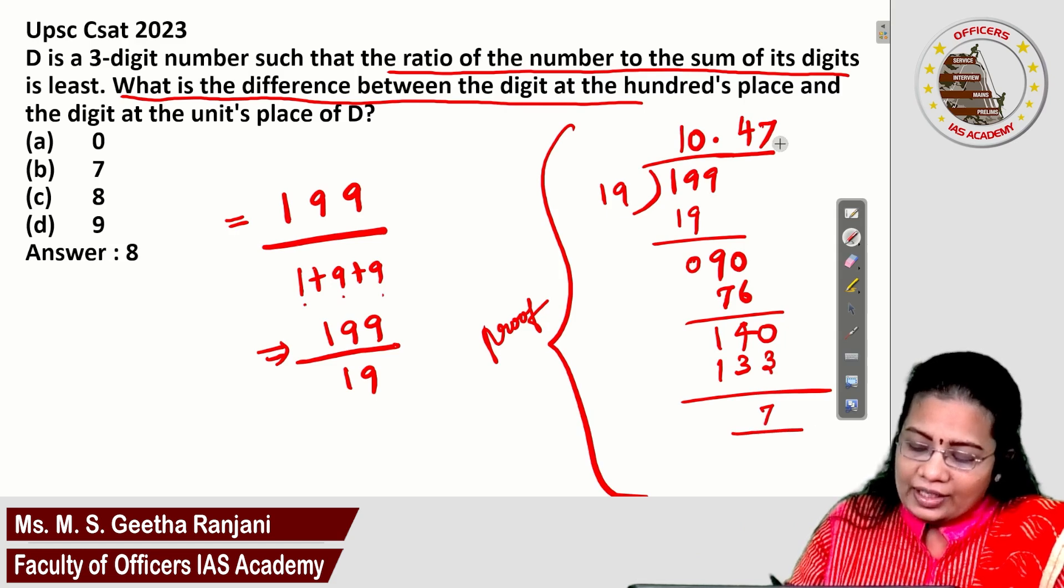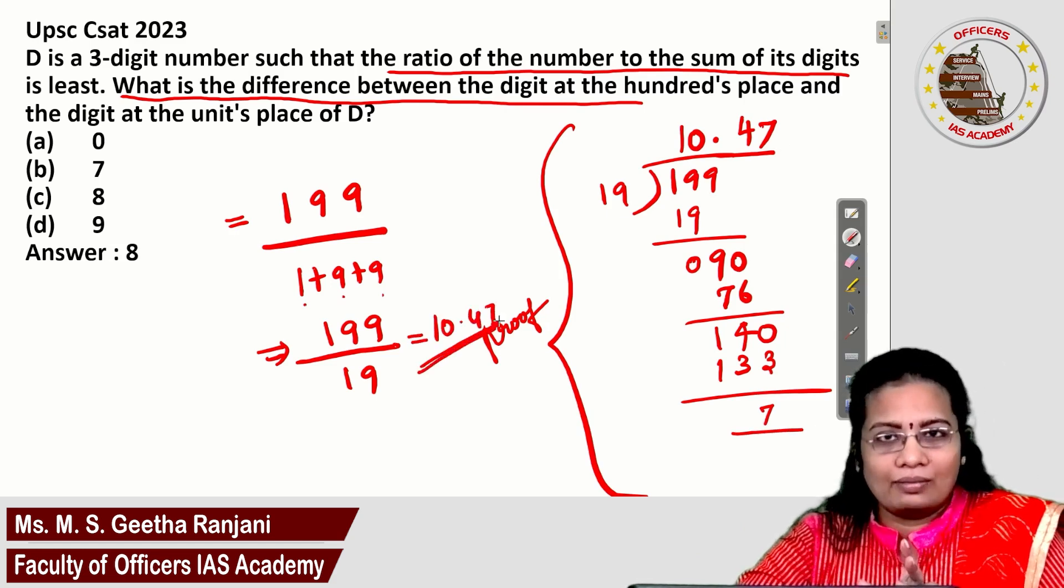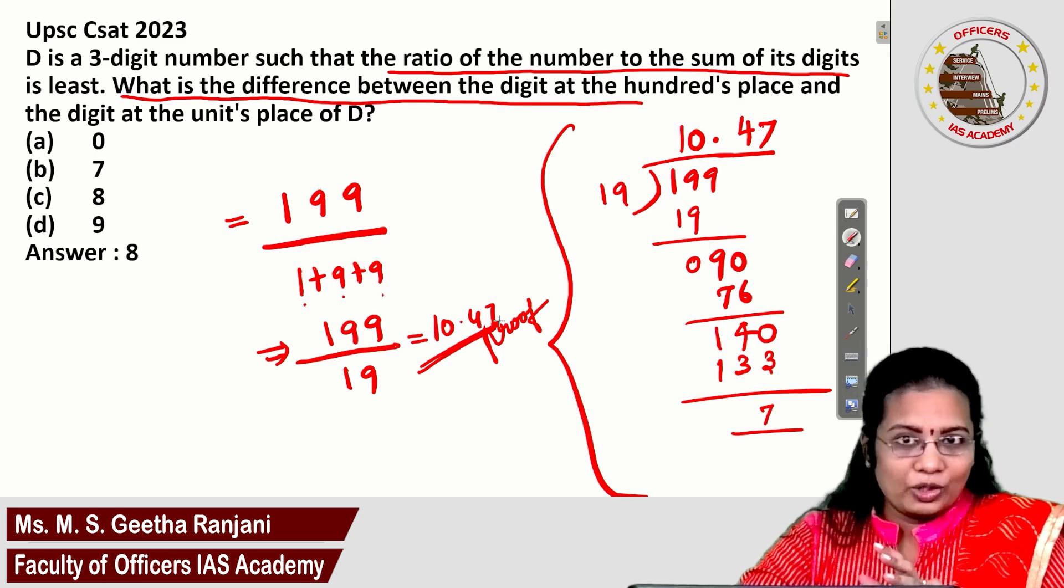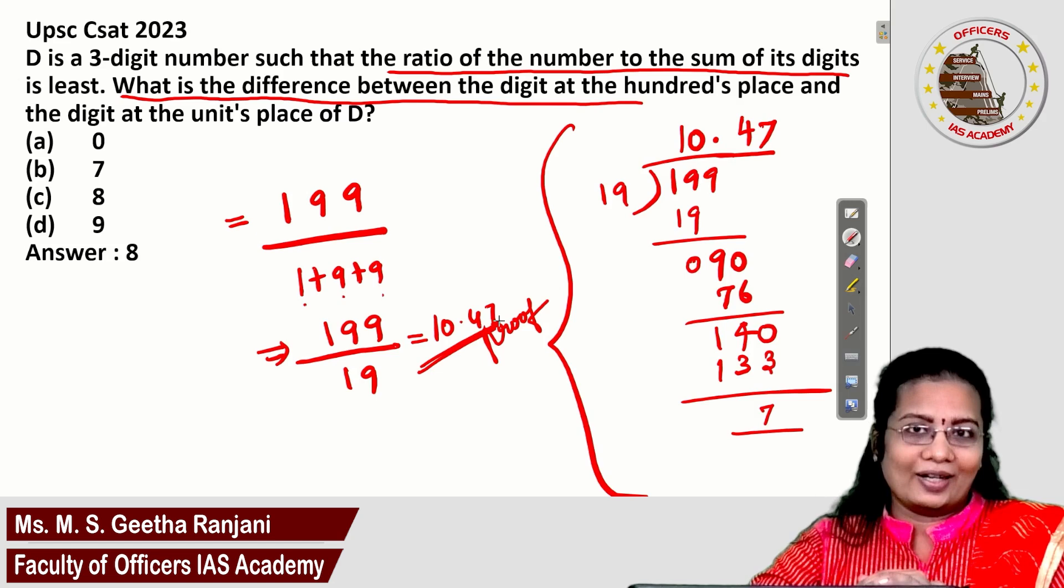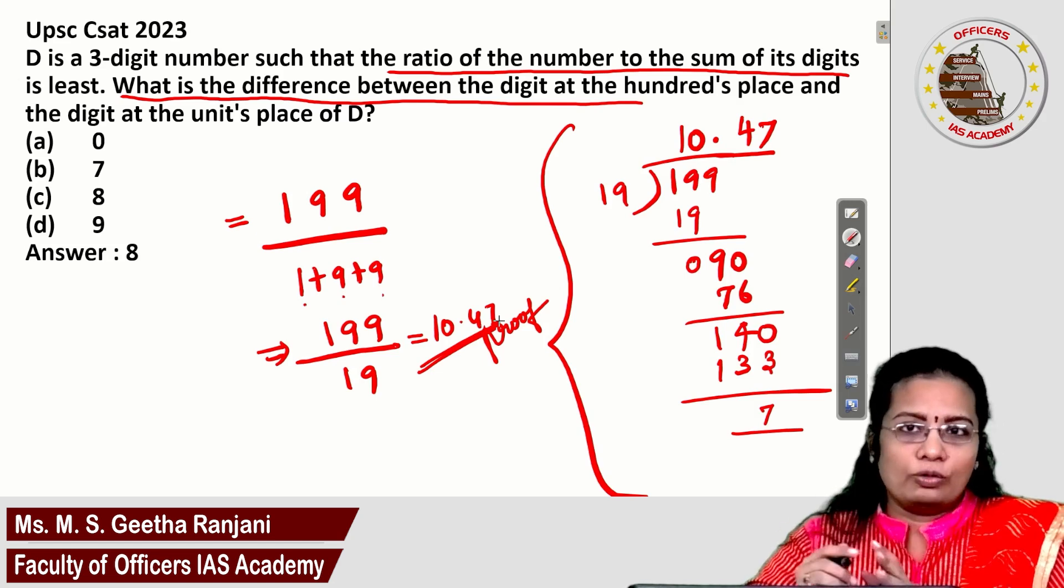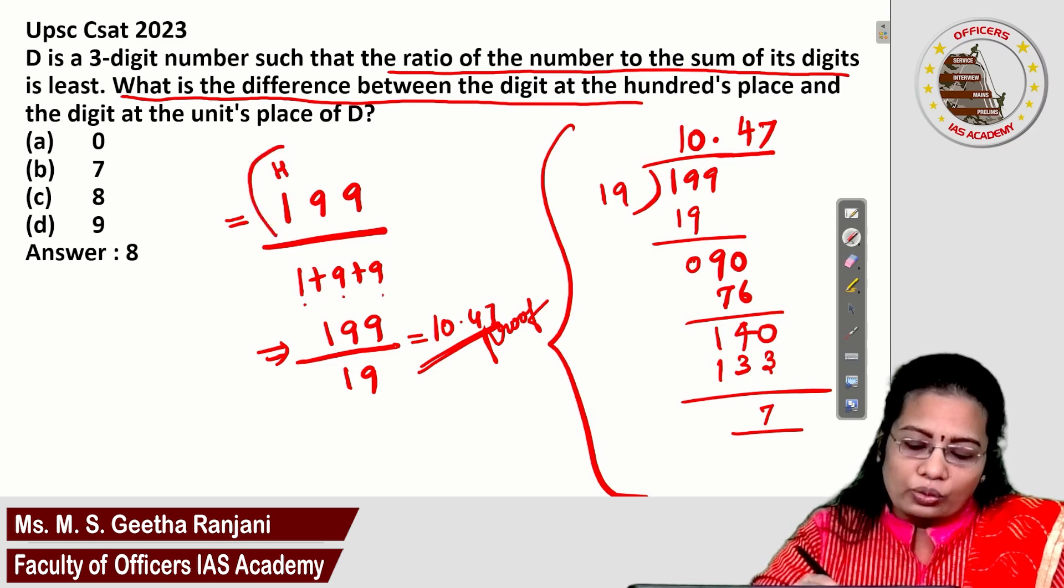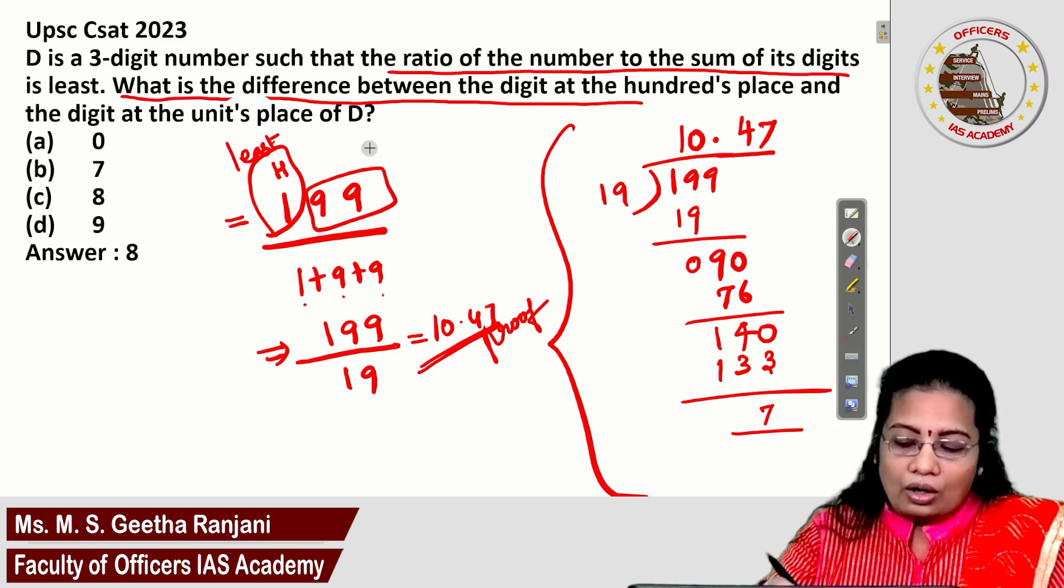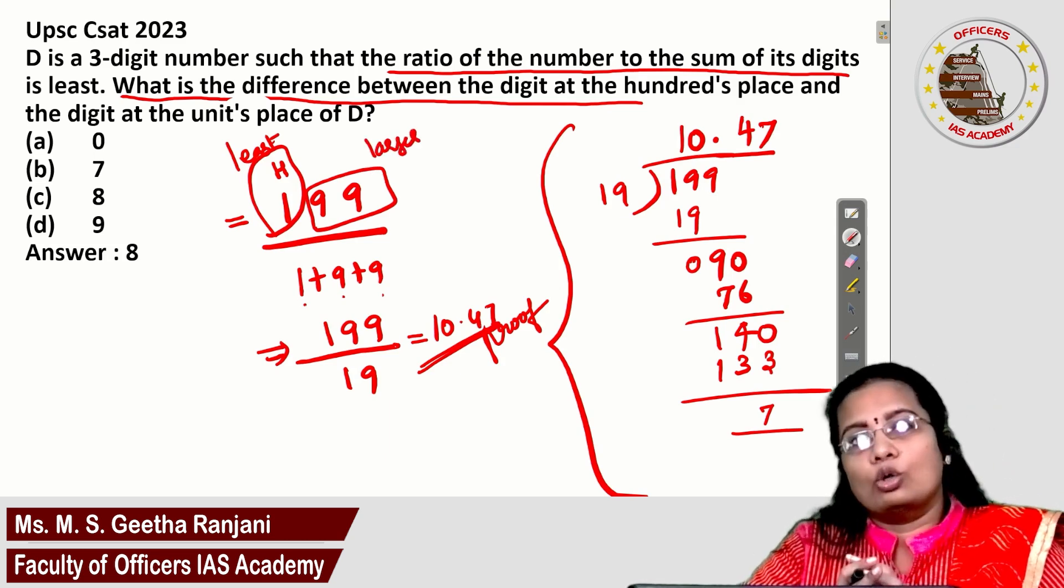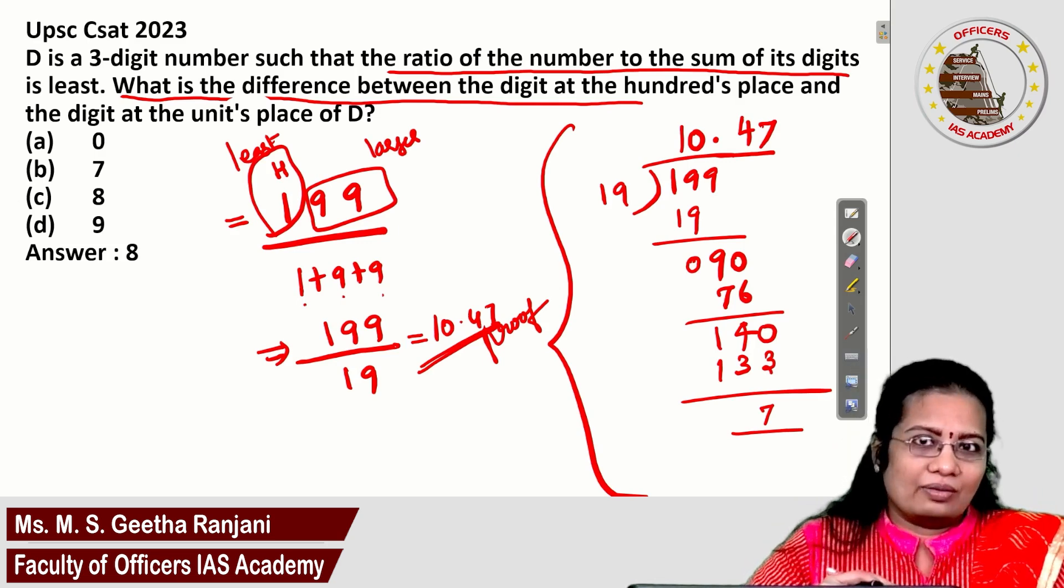This is just for your proof. The remaining will be 7. We can take the least value we got - this proof is given so you can check with some other value to get the least value, whether you will be able to get below 10.47 or not. Definitely you will not get that. The idea you want to use in examination: the 100th place value, take it as the least, and remaining 2 digits, take them as the larger values.